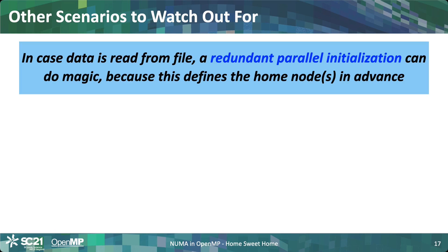I want to finish with some other things to watch out for. In case you read data from a file, that's typically done by a single thread, which means that thread will own all the data and the home node has been defined. As you proceed to execute your program the home node will stay the same. How to avoid it? You can do a redundant parallel initialization of your data — if you're reading a vector from a file, use the trick I just showed and initialize that vector in parallel before you do the I/O. That vector will then have its placement defined already, so when you read in the data it'll be distributed across the nodes. It's surprisingly powerful, though it may not always be easy to implement.